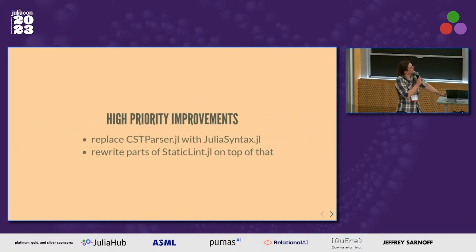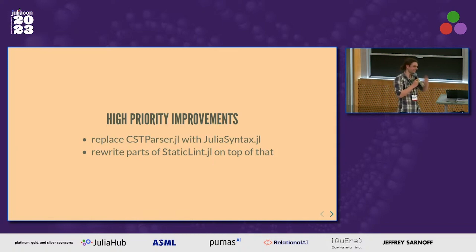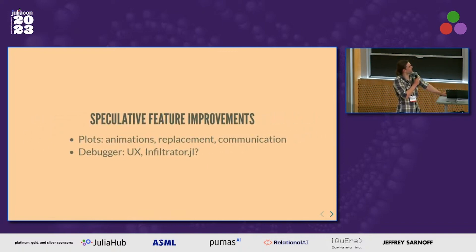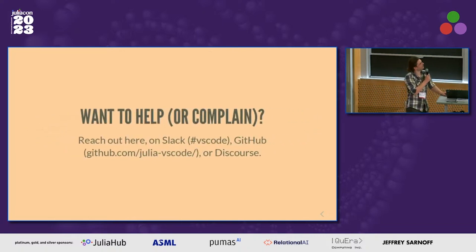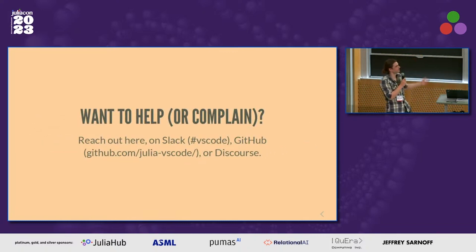What's in the future? Some high-priority improvements I'd like to spend more time on: replacing CSTParser with JuliaSyntax and rewriting parts of StaticLint on top of that, just for correctness's sake. Speculative improvements around features — there have been some asks around plots, making them better, and the debugger of course. If you want to help out or complain, feel free to find me or reach out on Slack, GitHub, or Discourse. All right, just on time — thank you.